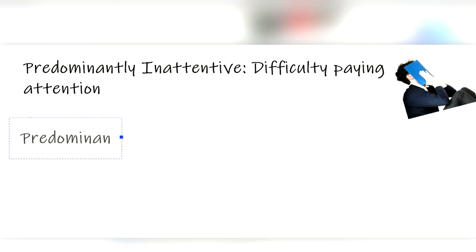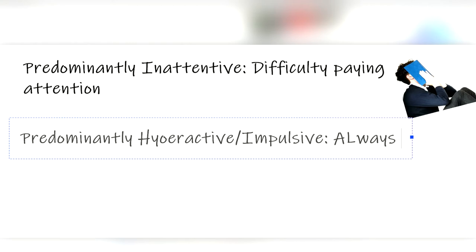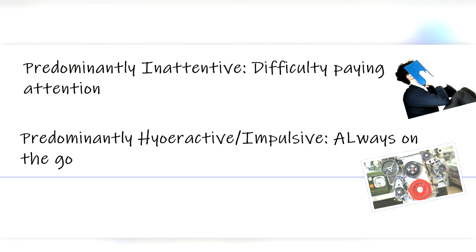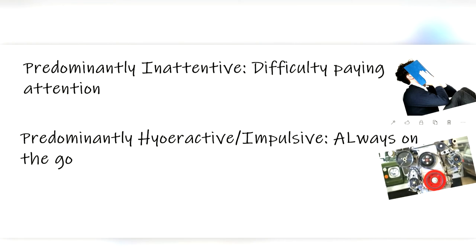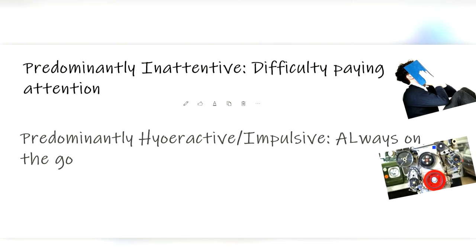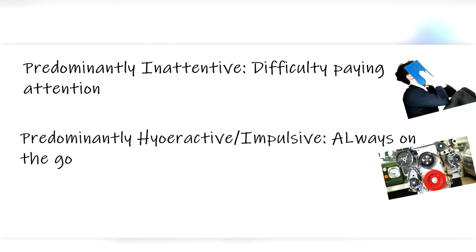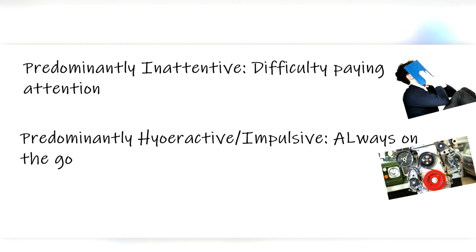The next subtype is the hyperactive impulsive subtype and is categorized by the child seeming to be run by a motor that rarely shuts off. And it has the same six to nine or five to nine criteria as the inattentive subtype. But the symptoms include being fidgety, inability to stay seated, runs or climbs when inappropriate, unable to play quietly, always on the go, talks too much, blurts out answers before the question is finished, difficulty waiting their turn, or interrupting others.